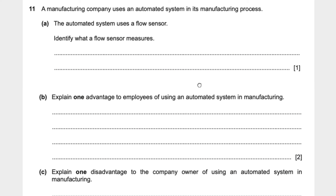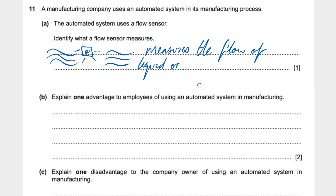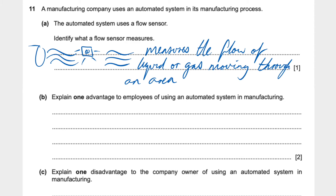Question 11: A manufacturing company uses an automated system in its manufacturing process. The automated system uses a flow sensor. Identify what a flow sensor measures. A flow sensor measures the flow of liquid or gas moving through an area — it could be a pipe or a river. Either a liquid or a gas. That would give us one mark.